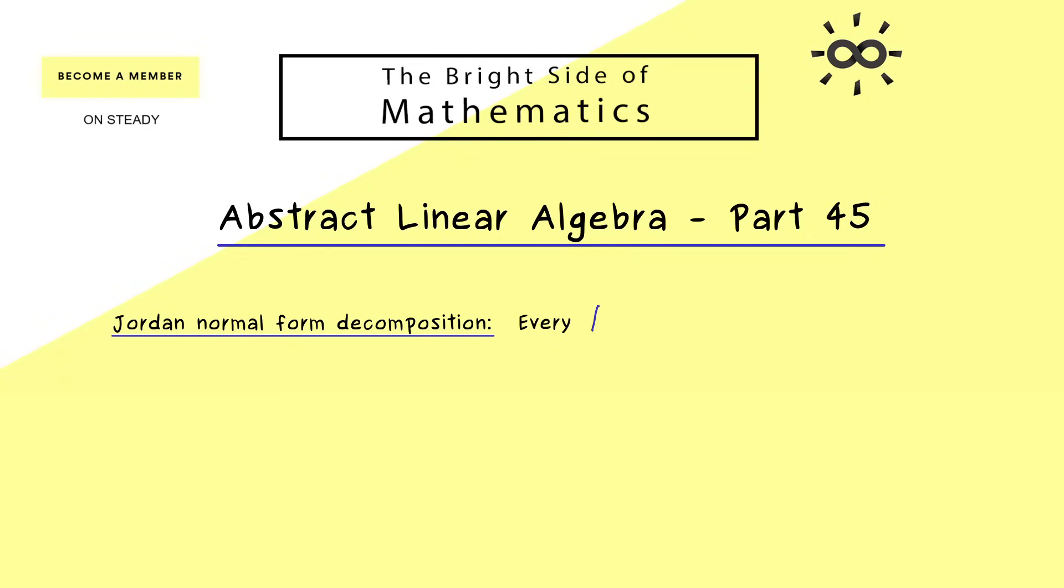This one states that every square matrix A with complex entries can be written as a matrix product such that A is similar to a Jordan normal form. So more concretely, we just have an invertible matrix X and a Jordan normal form such that we have A equals X times J times X inverse. And there you already know, the Jordan normal form J is a special upper triangular matrix. And there you already recognize, that the Schur decomposition is not so different.